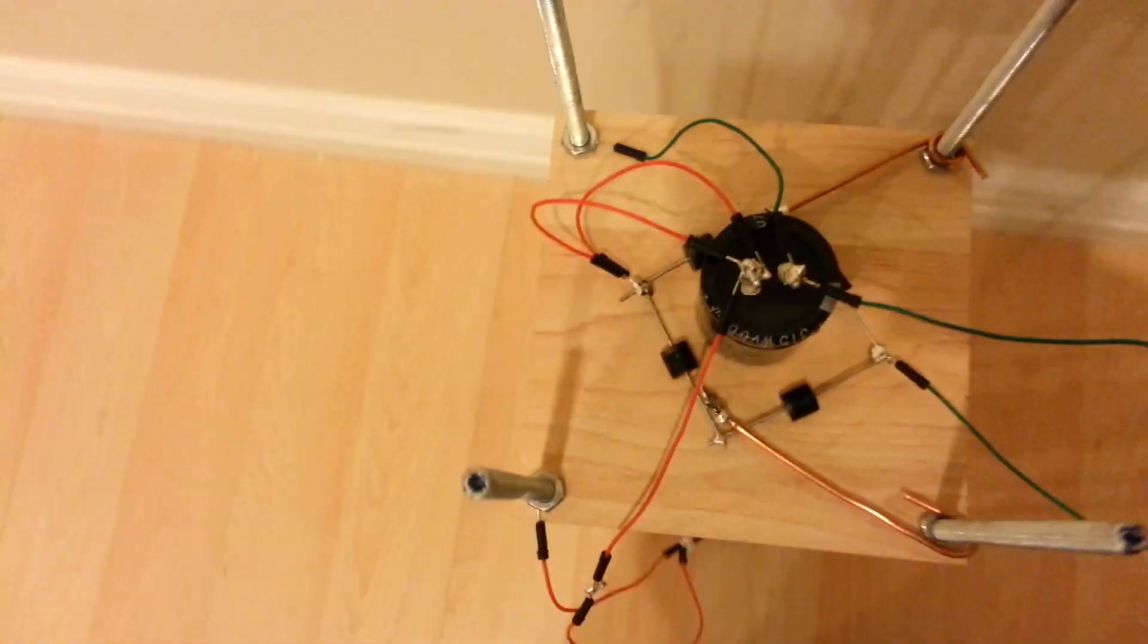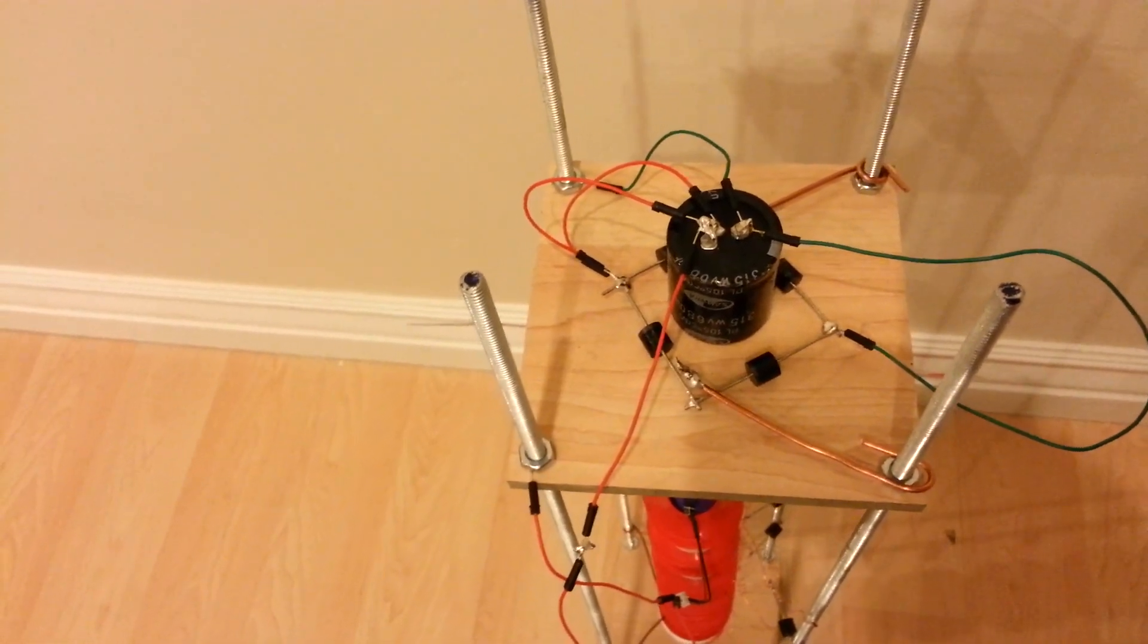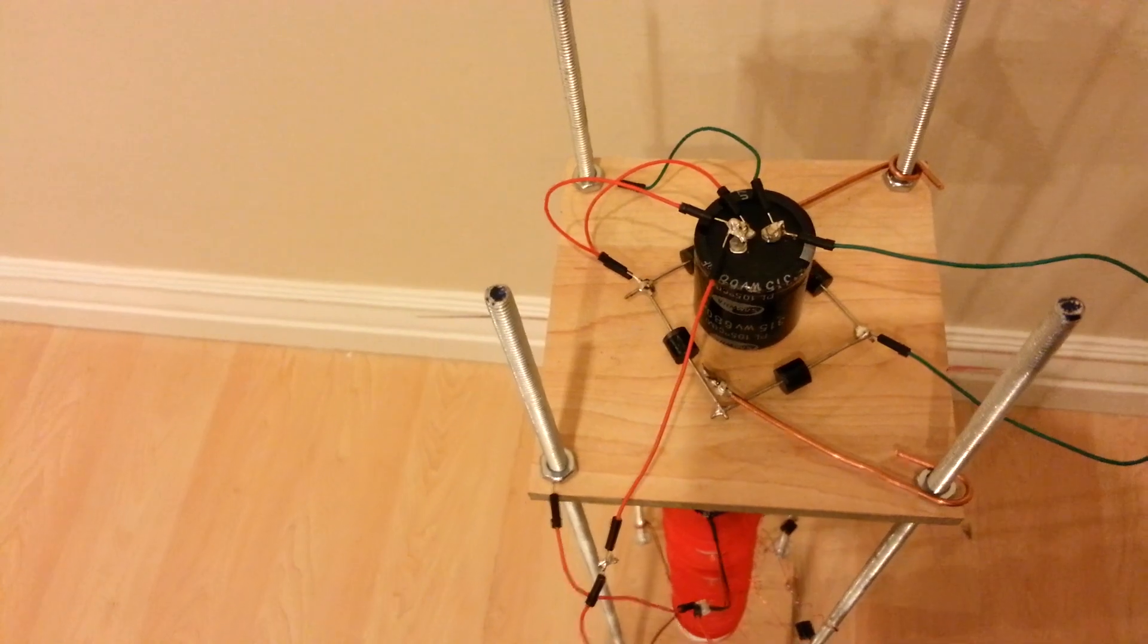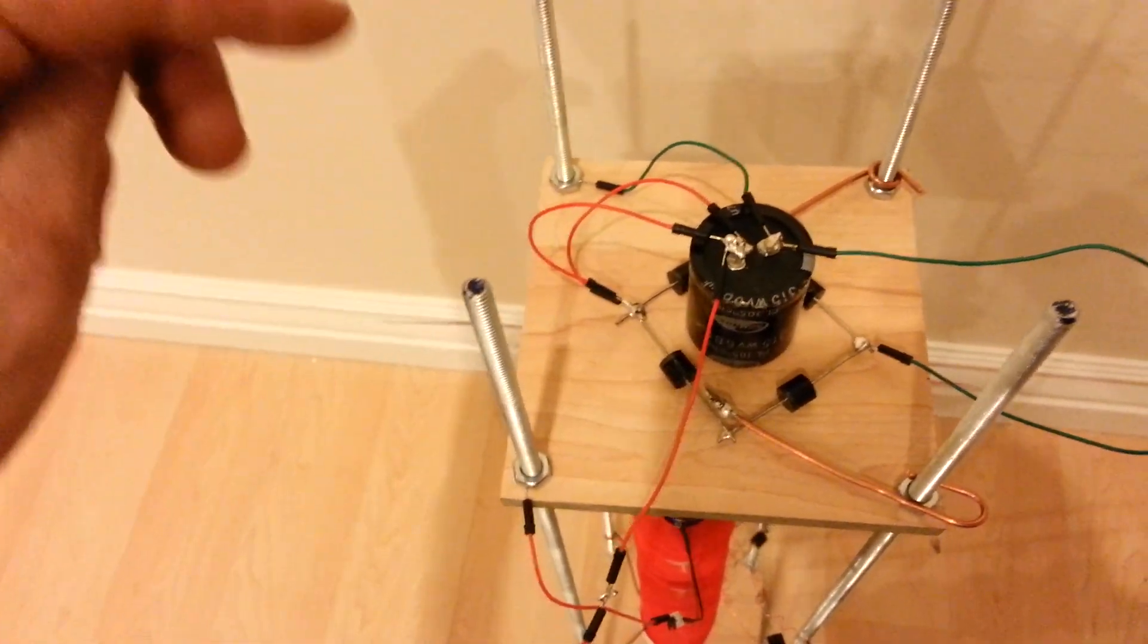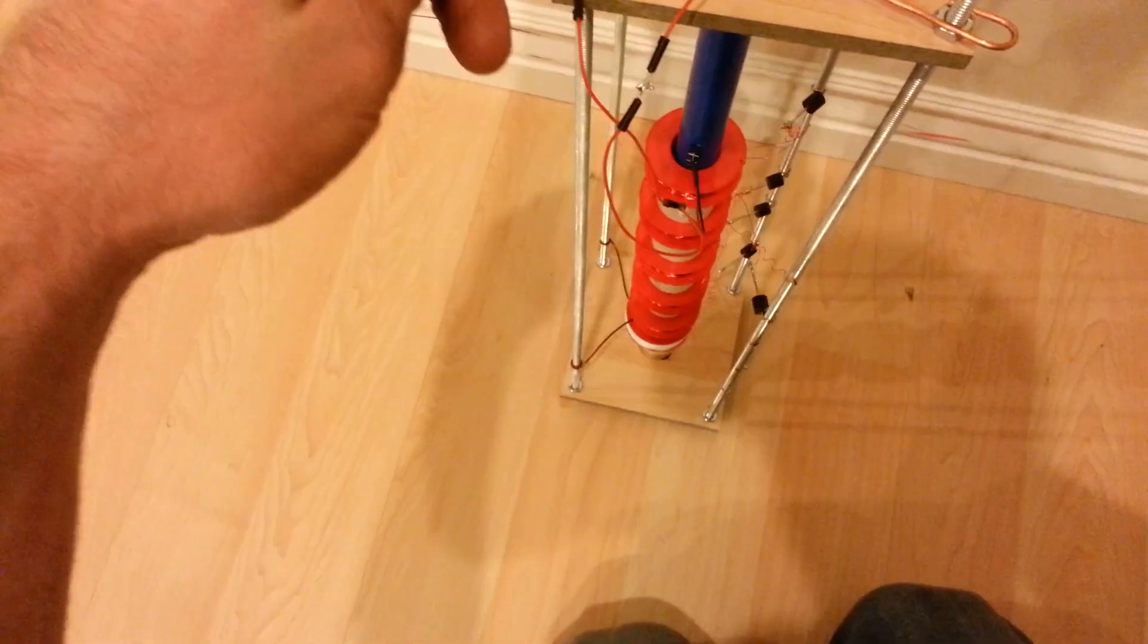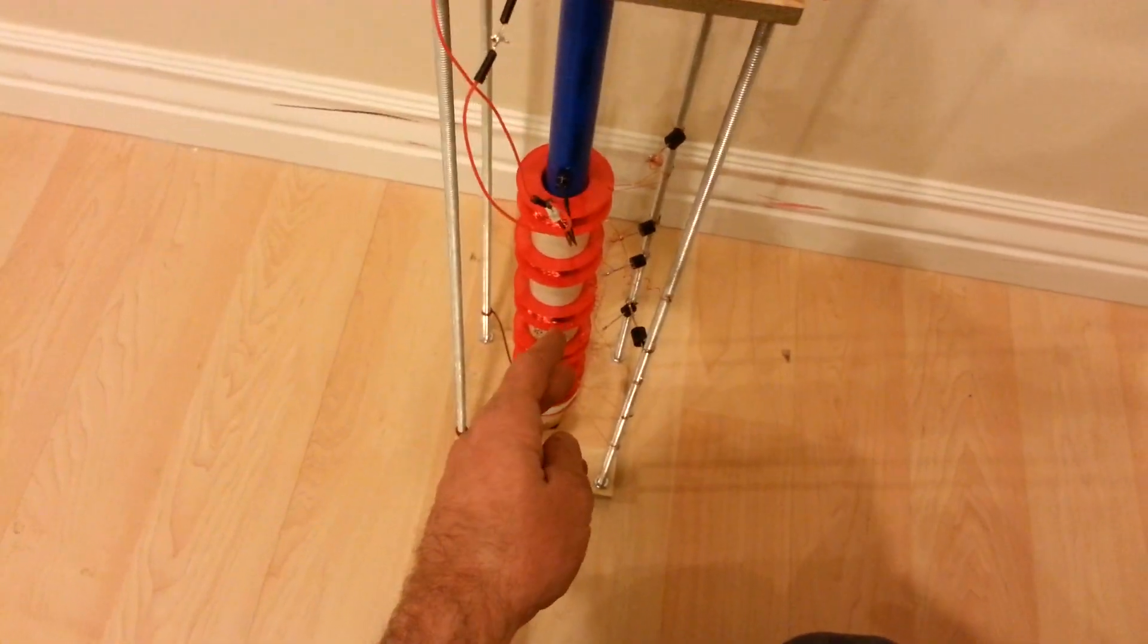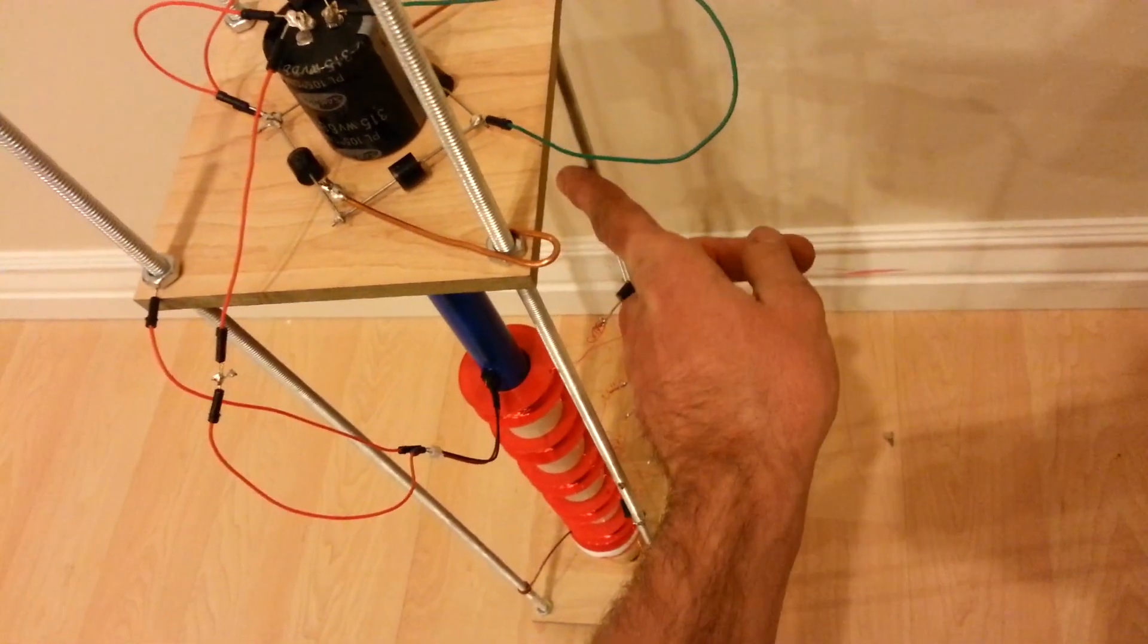But it goes from those into the bridge rectifier, changes it to DC current, and then it goes from there up into this capacitor bank. From the capacitor bank it goes over here to these rods, and these rods are connected down to this driver coil right here. So all of the pickup coils are soldered to and connected to these two rods right here.